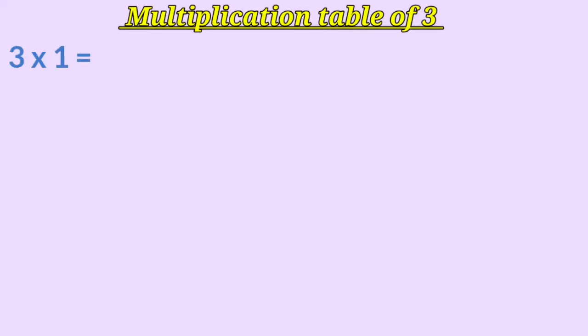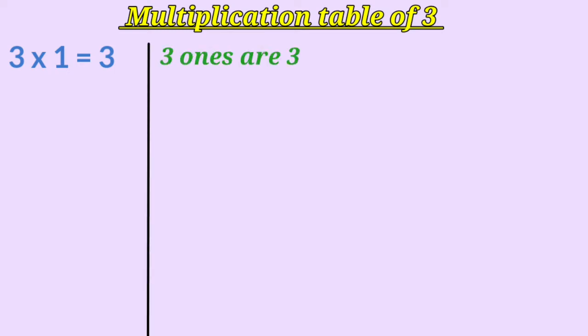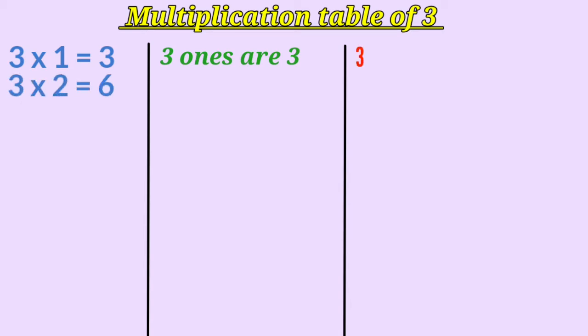3 multiplied by 1 is 3, or 3 ones are 3. How many times are we adding number 3 here? Here we are adding number 3 only 1 time. 3 multiplied by 2 is 6, or 3 twos are 6, which means we are adding number 3 only 2 times.